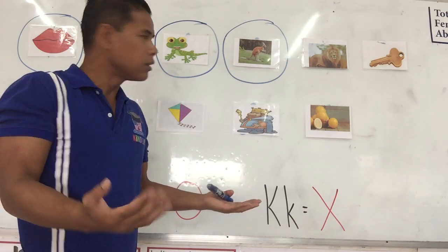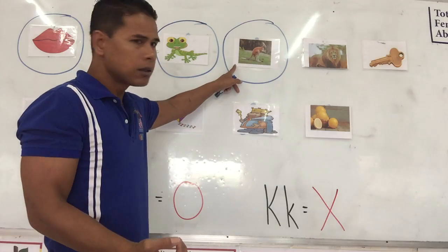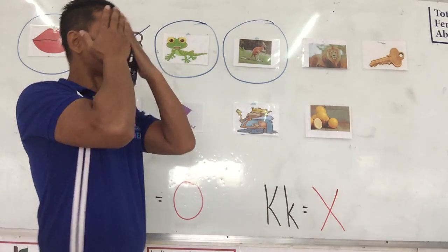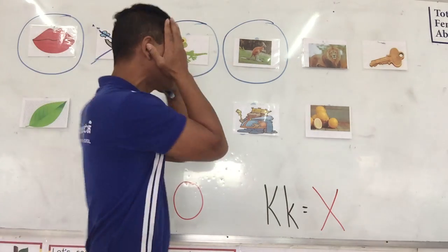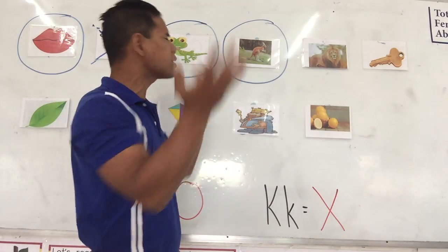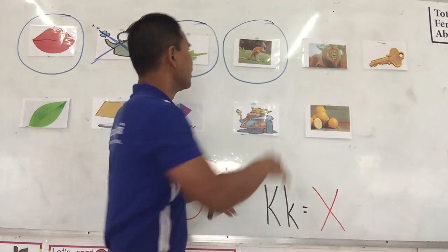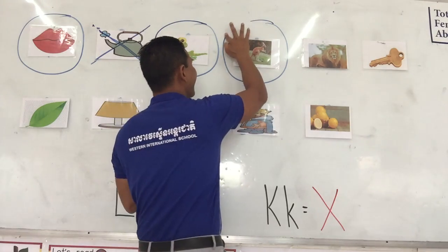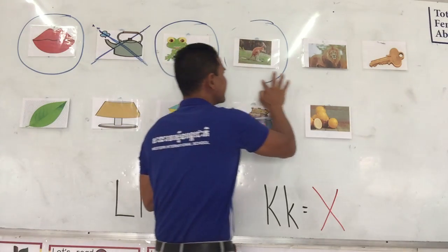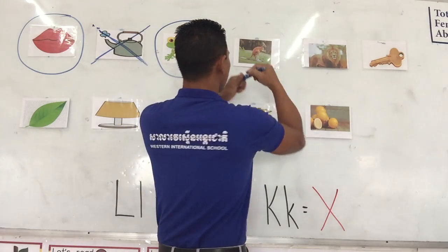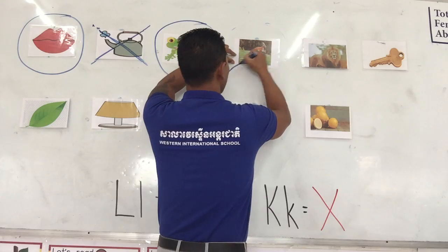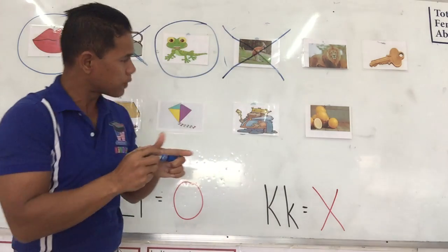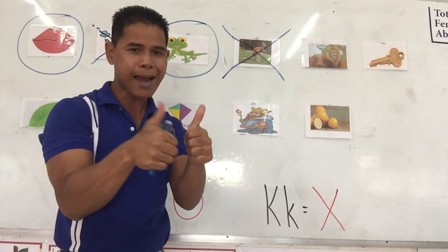I circle it. Oh, letter K is an X, teacher. No, kangaroo is letter K, so it's an X. We don't circle it, right? No, we put an X. We put an X. We cross it. We put an X. Excellent job. Thank you. For the letter K, we put an X.